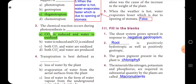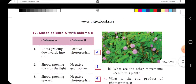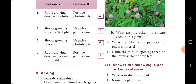Third one: the green pigmentation present in the plant is — the answer is chlorophyll. The minerals like nitrogen, potassium and phosphorus are required in substantial quantity by the plants are called — the answer is macronutrient.